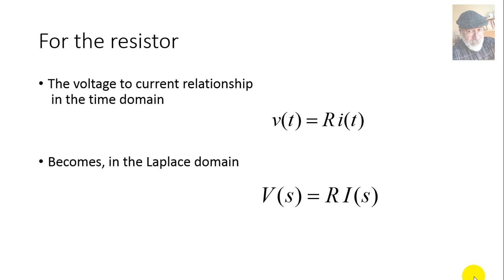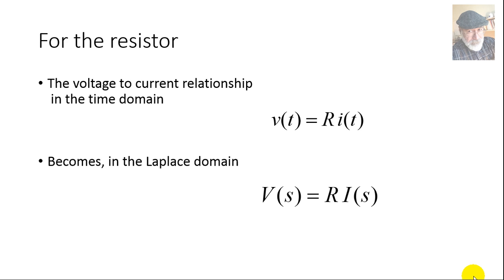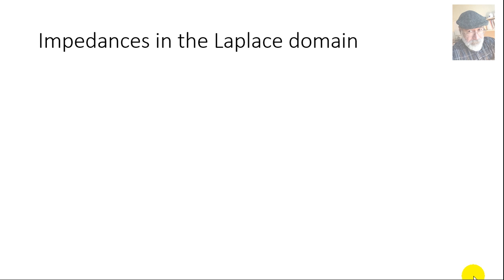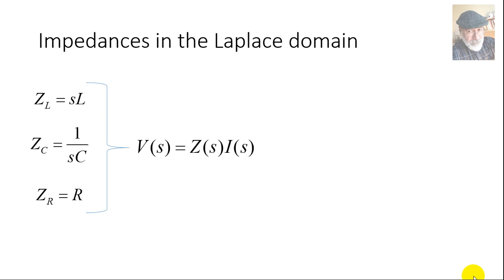For a resistor, same old: V = R·I in the time domain, V = R·I in the Laplace domain. Putting all impedances together in the Laplace domain: for the inductor, sL; for the capacitor, 1/Cs; for the resistor, its own resistance R. With these impedances, Ohm's law V = Z·I is well and alive in the Laplace domain.